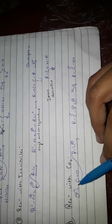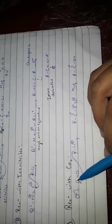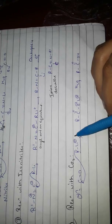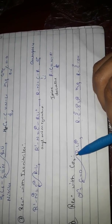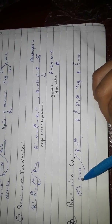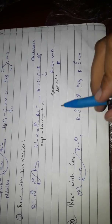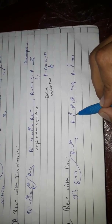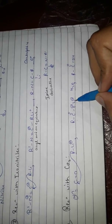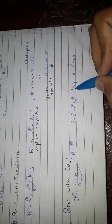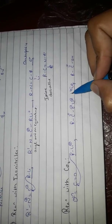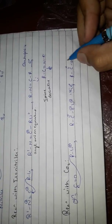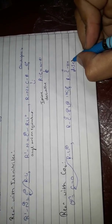Reaction with CO2: n-butyl lithium (RLi) attacks the carbon of CO2. The R group attaches to the carbonyl carbon, giving an intermediate with Li bonded to oxygen. On hydrolysis with H2O, the product is a carboxylic acid.